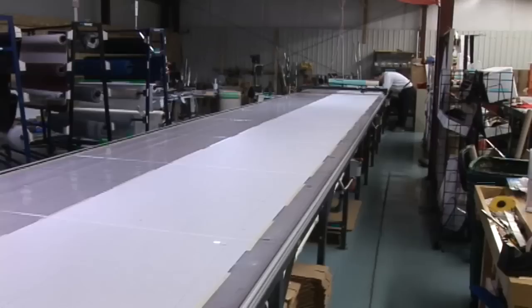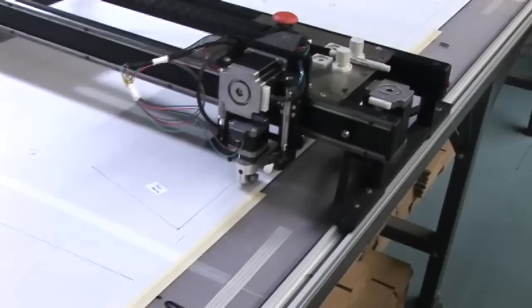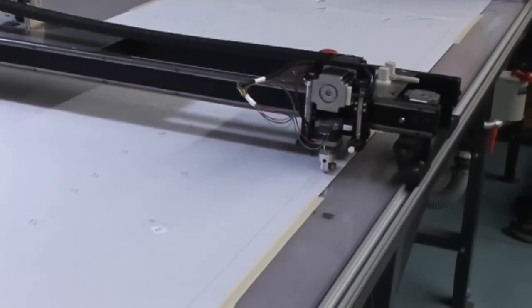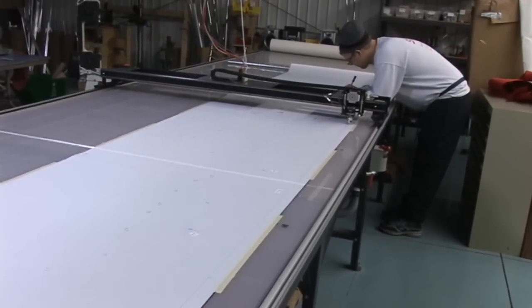Once Jeff is done designing they are plotted on Sailrite's state of the art 50 foot plotter bed. This plotter cuts each panel with the desired shape that Jeff designed including seam lines, hem lines and even patches.